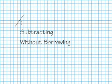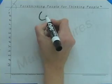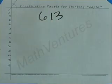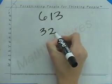Here we'll show why this method of subtraction without borrowing works. We'll start with a number that's pretty simple to subtract from, like 613. And we want to subtract from it this number, 326.